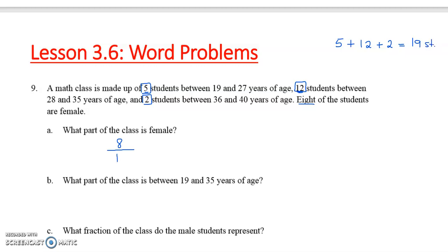So eight of the 19 are female. Now, for B, what part of the class is between 19 and 35 years of age? Well, five of them are in that 19 to 27 year category. And 12 of them are up to age 35. So we're going to take five plus 12 for part B, and that makes 17. So 17 out of the 19 are between 19 and 35 years of age.